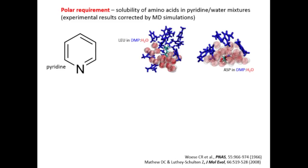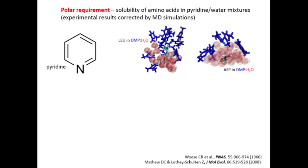Pyridines are pretty good physicochemical analogues of pyrimidines. Woese derived a scale of pyridine binding propensity for amino acids. The lower the number, the higher the propensity of an amino acid to interact with pyridines — phenylalanine, leucine, and valine like to associate with pyridines, while aspartate, glutamate, and lysine preferentially associate with water. His scale has since been derived using molecular dynamics simulation, both by others and by us in many different ways — running MD simulations of this experiment, seeing water and dimethylpyridine and how they partition.